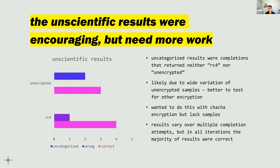I wanted to also do this with ChaCha encryption since Metasploit has a ChaCha payload, but the payload size is about 4,000 bytes — too large to feed into OpenAI's training. The results are probabilistic, not deterministic, so results varied over multiple iterations. But in all of them, the majority of results were correct. I was able to train a GPT-3 model — designed for natural language — to parse assembly code and classify whether it's RC4 or not.